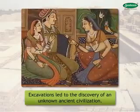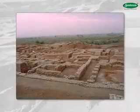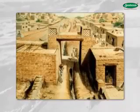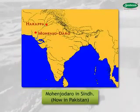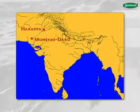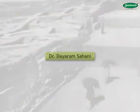These excavations led to the discovery of an unknown ancient civilization. This newly discovered civilization was named the Harappan civilization, as the first site discovered was Harappa. Harappa in Punjab, along with Mohenjo-daro in Sindh, was among the earliest sites discovered of this civilization. Both these places are now in Pakistan.